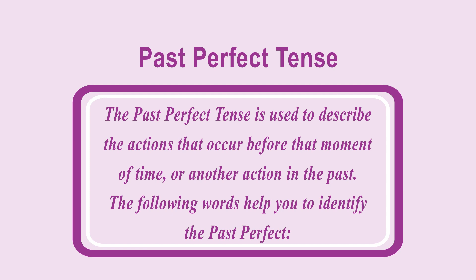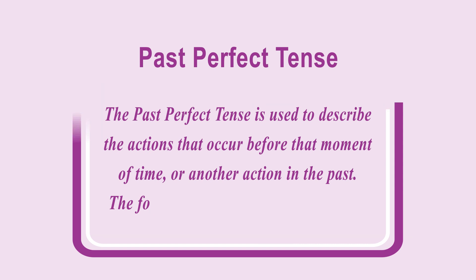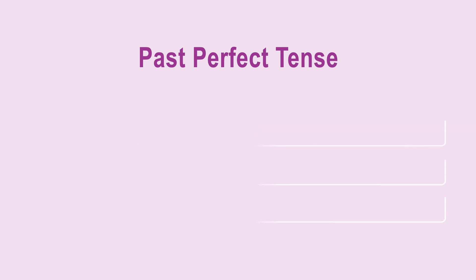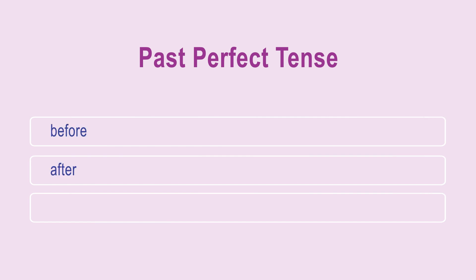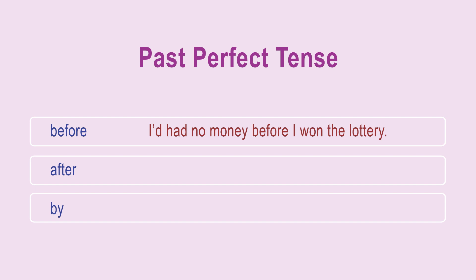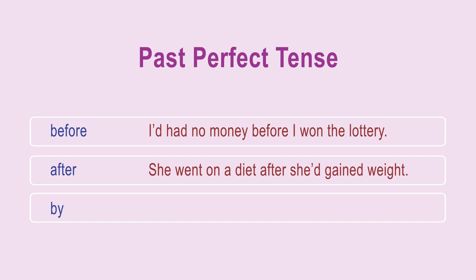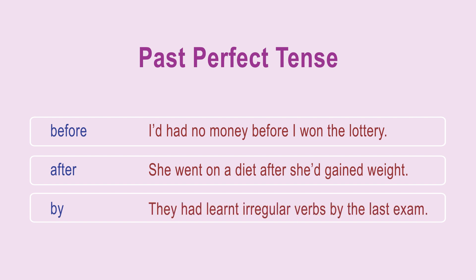Past perfect tense is used to describe actions that occur before a moment of time or another action in the past. The following words help you to identify the past perfect: before, after, by. For example: I'd had no money before I won the lottery. She went on a diet after she'd gained weight. They had learnt irregular verbs by the last exam.